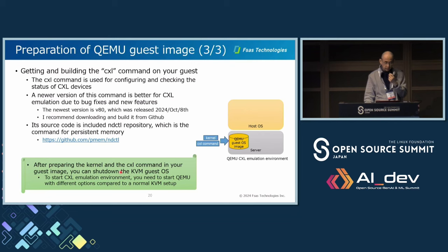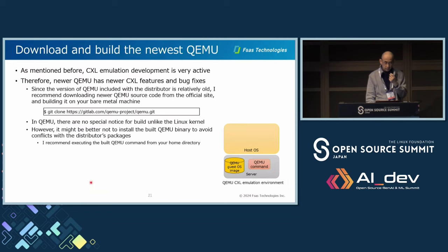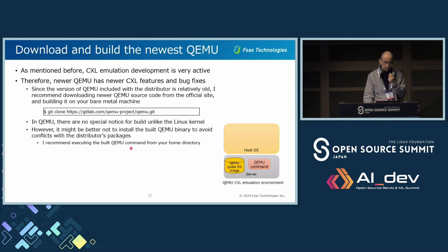To start the CXL emulation environment, you need to start QEMU with different options compared to the normal KVM setup. You need to download and build the newest QEMU. As mentioned, CXL emulation development is very active, so newer QEMU has newer CXL features and bug fixes. Since the version of QEMU included with distributors is relatively old, I recommend downloading newer QEMU source code from the official site and building it on your bare metal machine. It might be better not to install the built QEMU binary to avoid conflicts with the distributor's package, so I recommend executing the built QEMU command from your home directory.